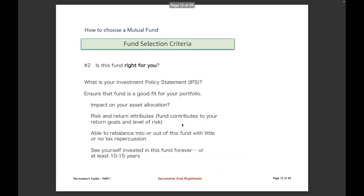Fund selection criteria number two: is this fund right for you? What is your investment plan or investing philosophy? Make sure the fund is a good fit for your portfolio — what's the impact on your asset allocation, what are the risk and return attributes, and are you able to rebalance into or out of this fund with little or no tax repercussion? Finally, and most importantly, if you align with the Bogleheads philosophy: do you see yourself invested in this fund for at least 10 or 15 years? We know how to get rich slow.